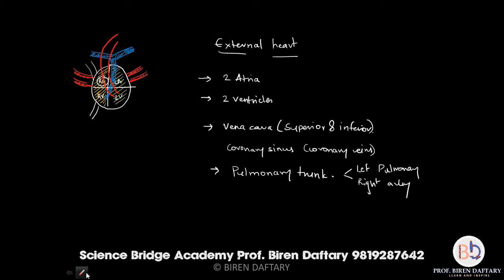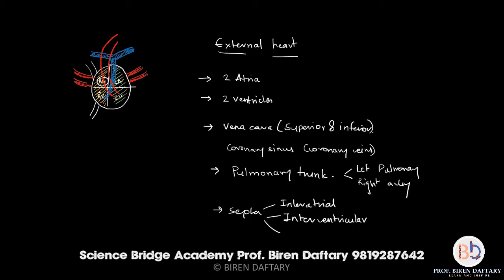There are septa, or walls, present between the four chambers of the heart. The one between the two atria is called the interatrial septum, the one between the two ventricles is called the interventricular septum, and the one present between the atrium and ventricle is called the atrioventricular septum. These are the three types of septa present in the heart.